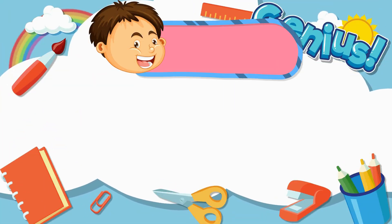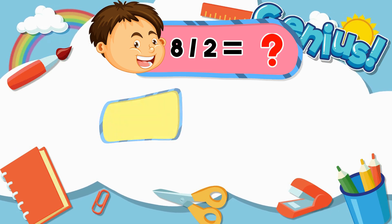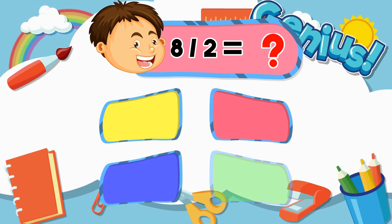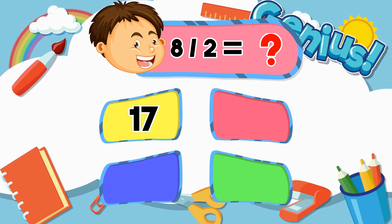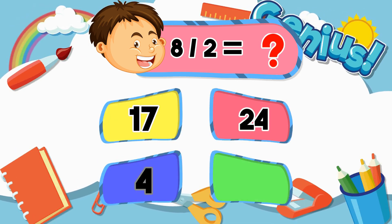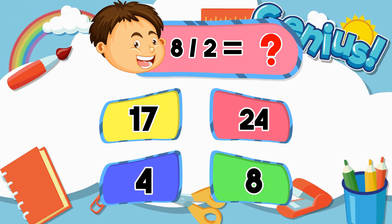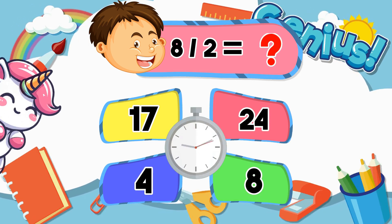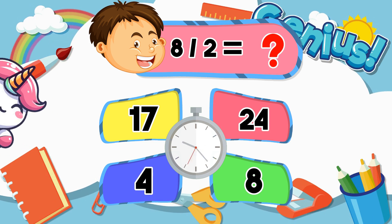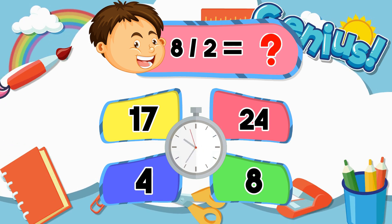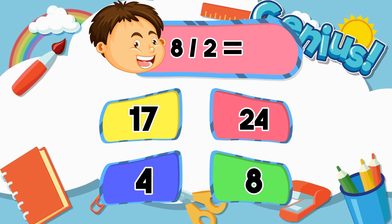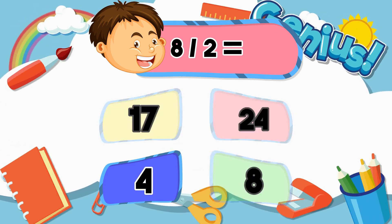What is 8 divided by 2? 17, 24, 8. The answer is 4.